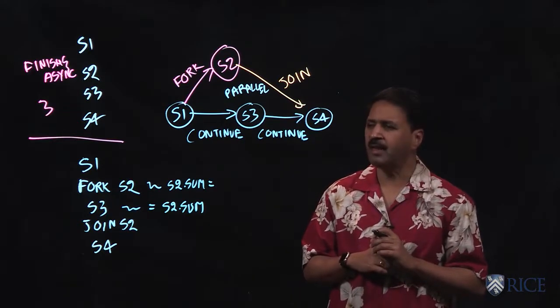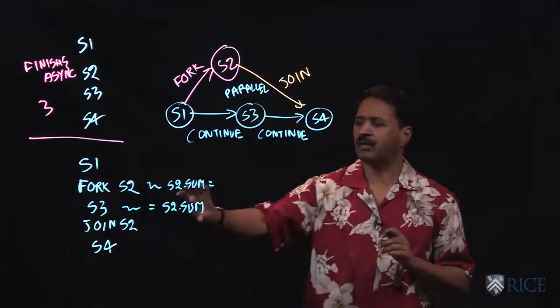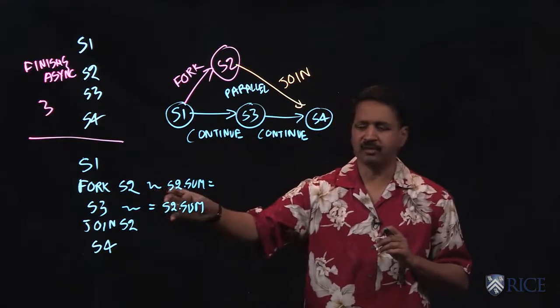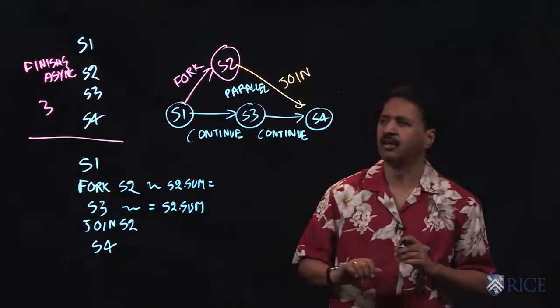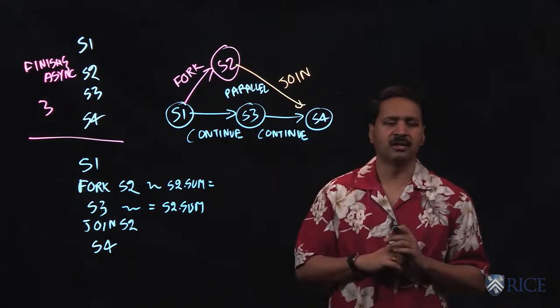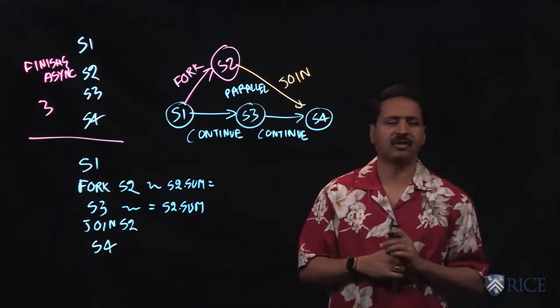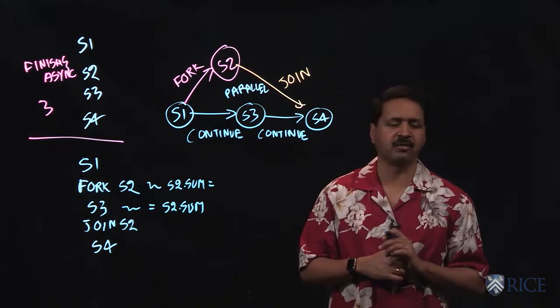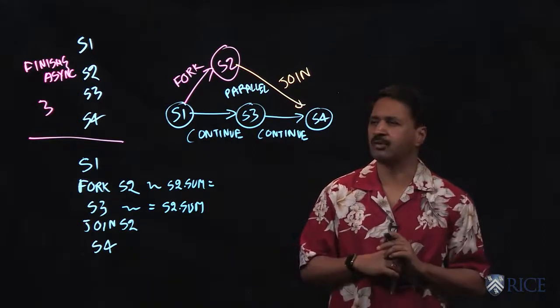That's called a data race. And that happens exactly when a read and a write access or two write accesses to the same location can occur in different steps of the computation graph that may execute in parallel with each other. And you already know how to tell if they may execute.